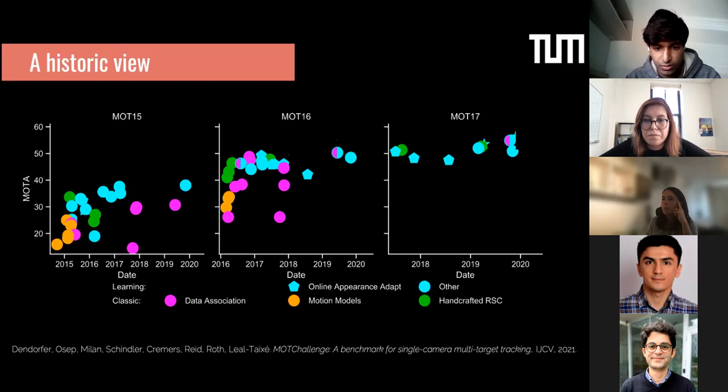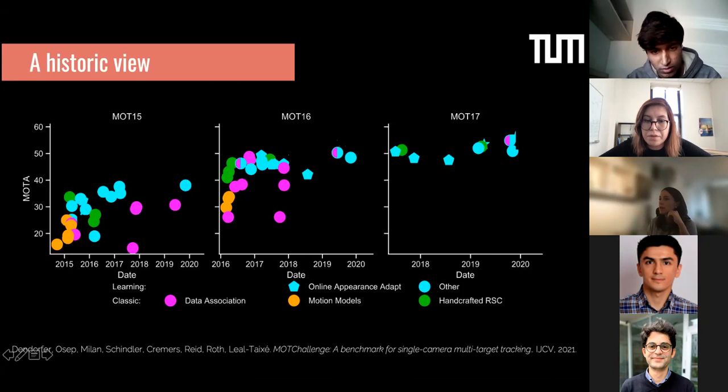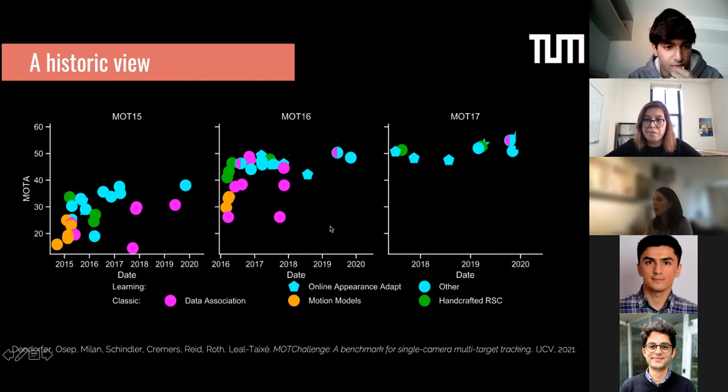Even before that, around 2015, there was a trend of working with motion models. I did some work myself on using social forces to better predict how pedestrians move, especially in crowded scenes. But this was quickly abandoned for data association methods. Then we saw a shift towards online appearance adaptation models, which try to learn how the appearance of a pedestrian will change over time.